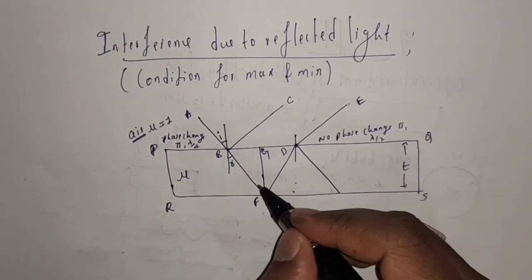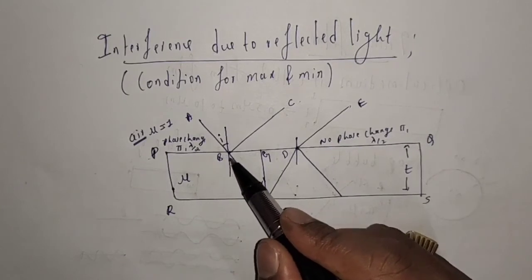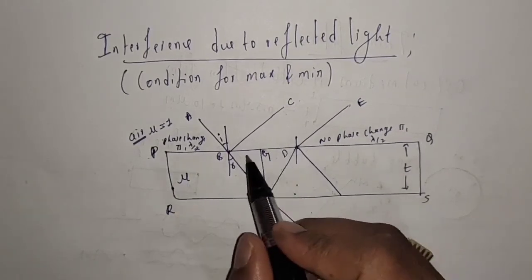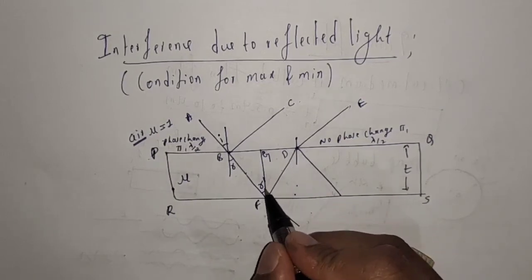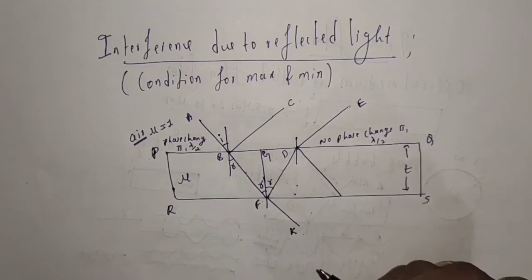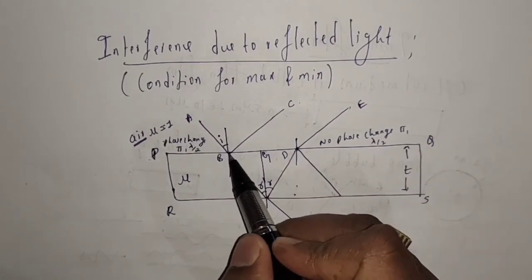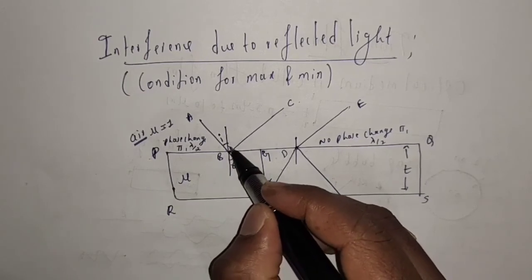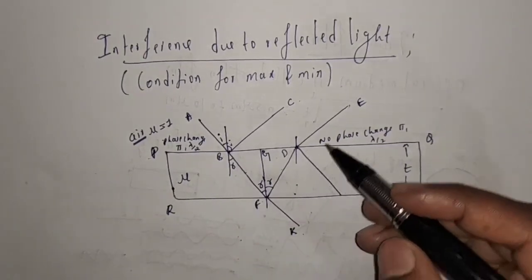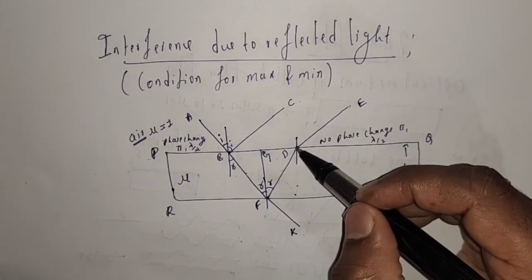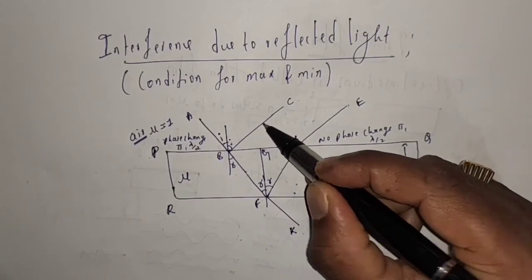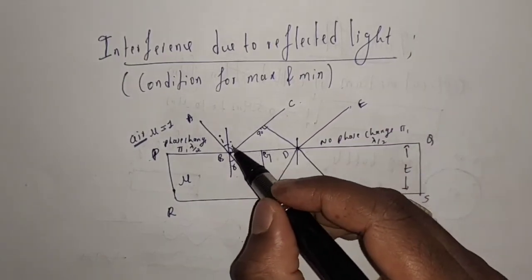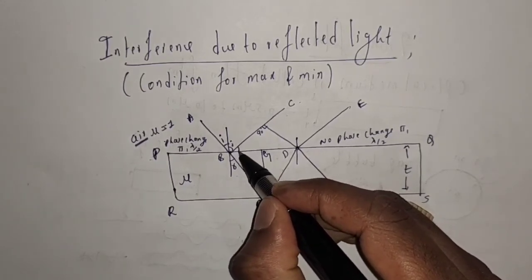From alternate angles, we can write the angle at G as R. In triangle BFG and triangle GFD, all sides are equal, so we can write this angle as R. The incident light AB makes angle I, and the reflected light BC also makes angle I. Now I am going to draw a perpendicular line on BC, which makes a 90 degree angle.